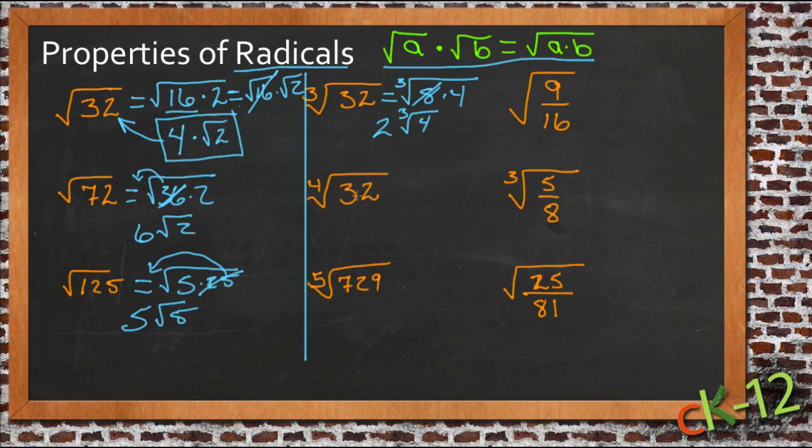For the 4th root of 32, well now we need a bigger number than 8 to pull out, we need something that has an even 4th root, so let's try 16.